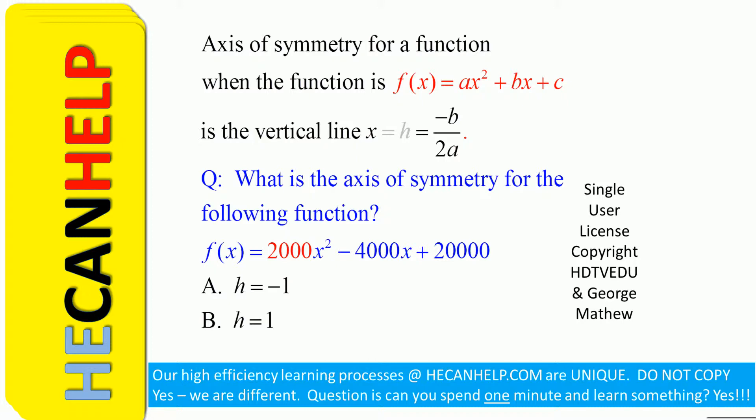What is the axis of symmetry for the following function? f of x equals 2000x squared minus 4000x plus 20,000. Is it a, h equals negative 1? Or is it b, h equals positive 1?